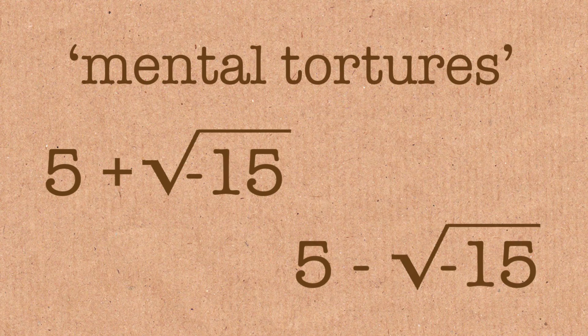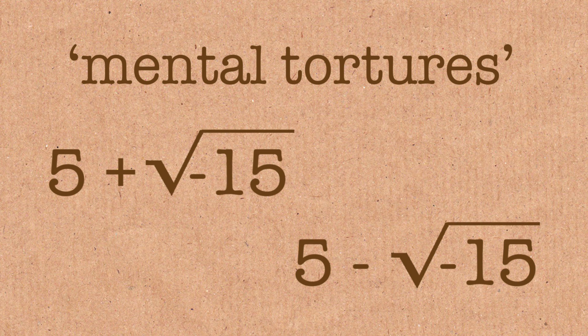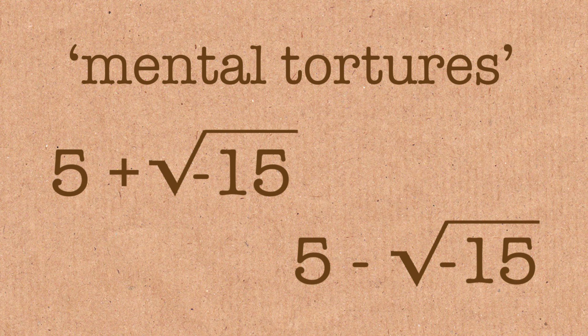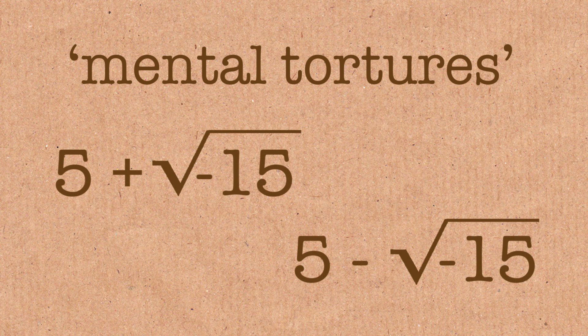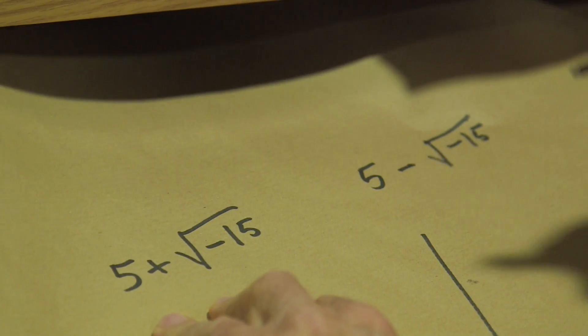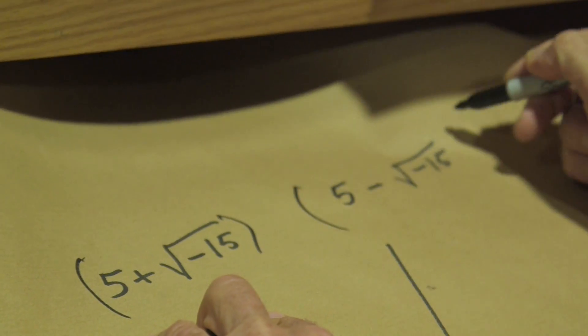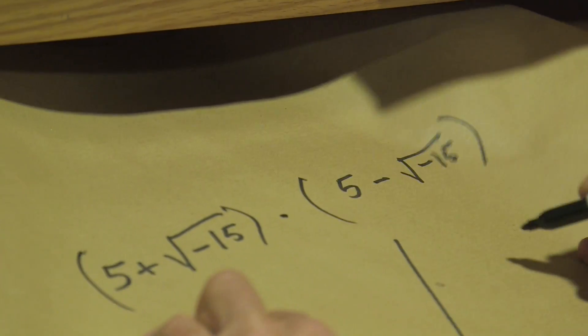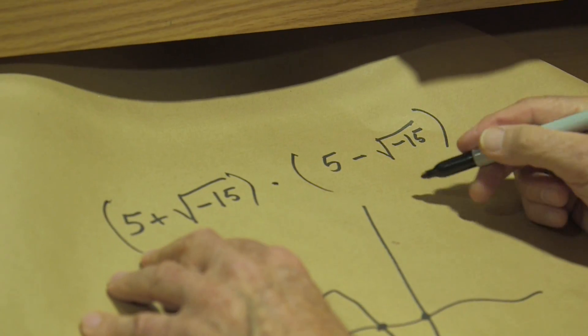Dismissing mental tortures and multiplying 5 plus the square root of minus 15 times 5 minus the square root of minus 15, you get, and he tells you how to do it.